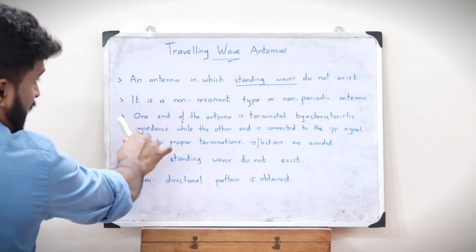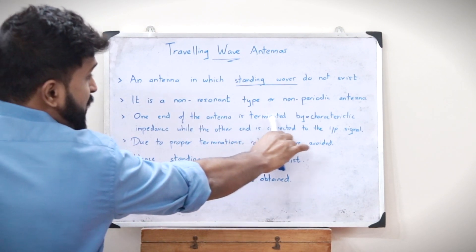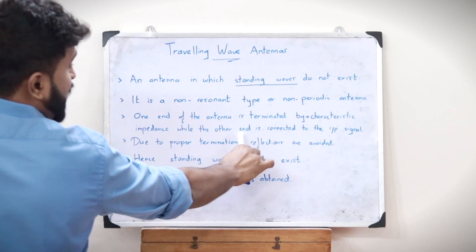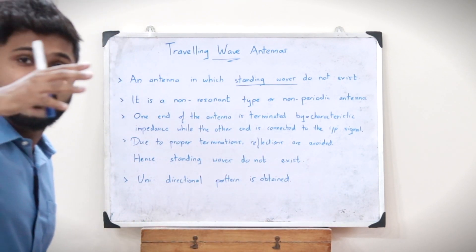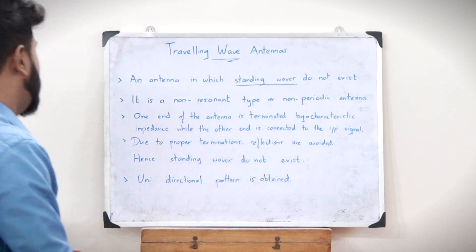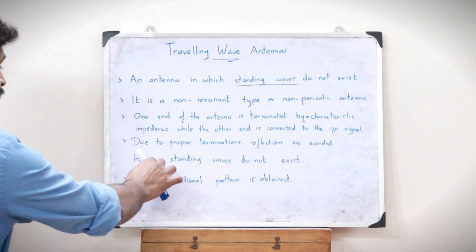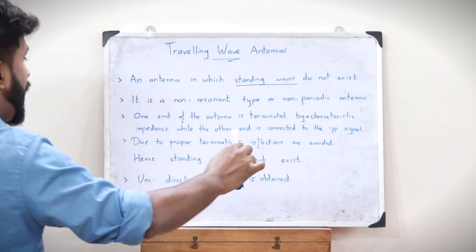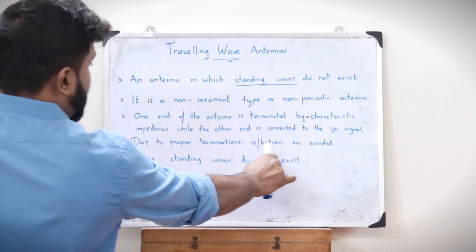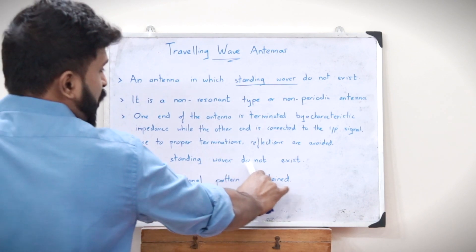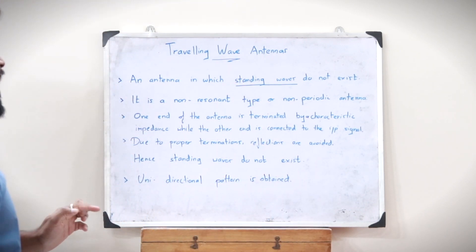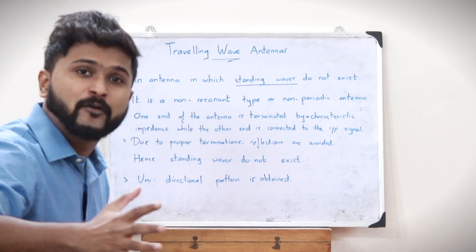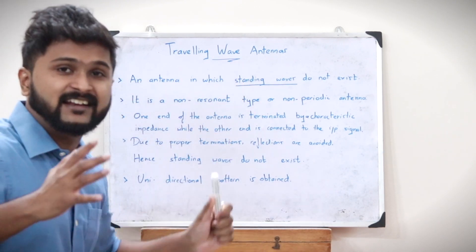Here, one end of the antenna is terminated by a particular characteristic impedance while the other end is connected to the input signal. As a result of this, due to proper terminations, reflections are avoided. Therefore, as reflections are avoided, standing waves do not exist, and hence we obtain traveling waves, producing traveling wave antennas.